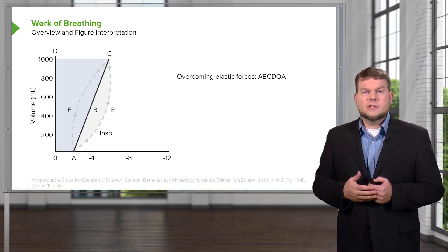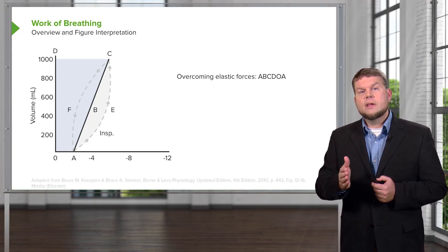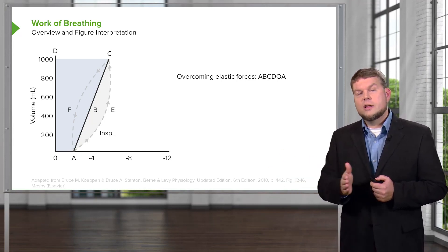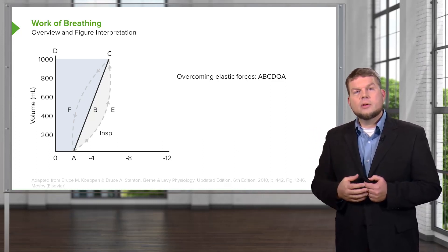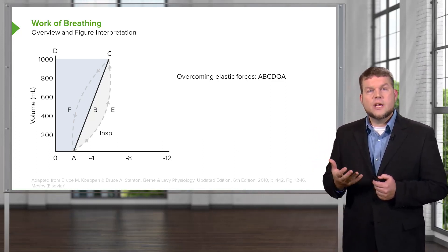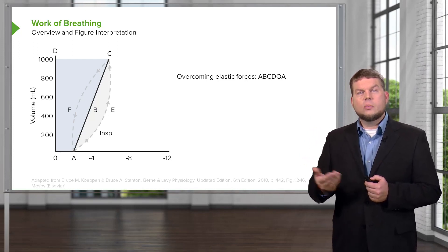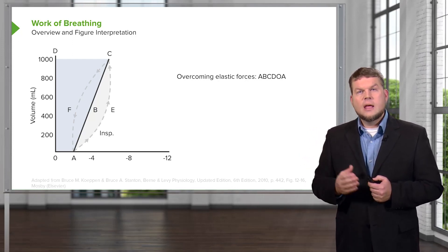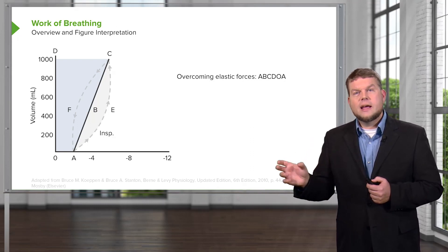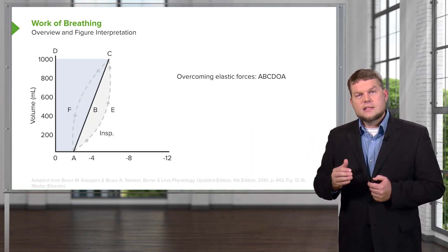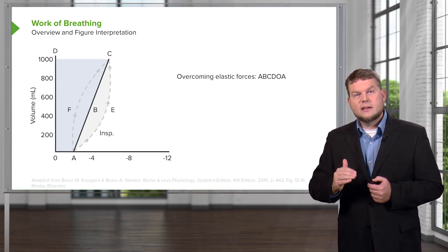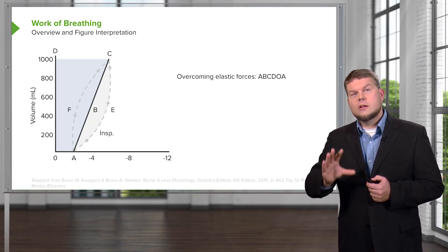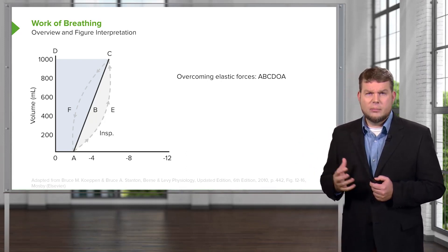We can use a diagram in which we have the amount of pressure on the x-axis and volume on the y-axis. We're going to have a number of different denotations on this graph to help you orient to what part we're talking about. If you're trying to overcome elastic forces, that is the force represented between points A, B, C, D, and 0, then back to A — that's the portion shaded in gray-blue.